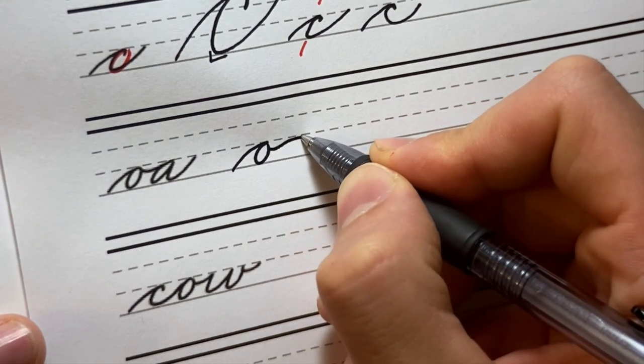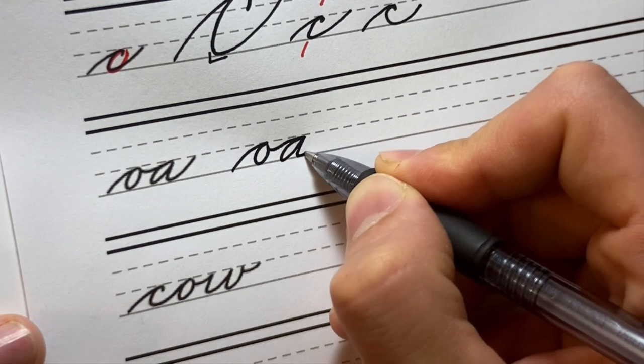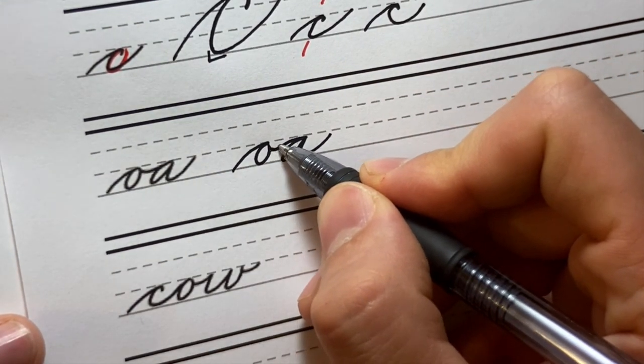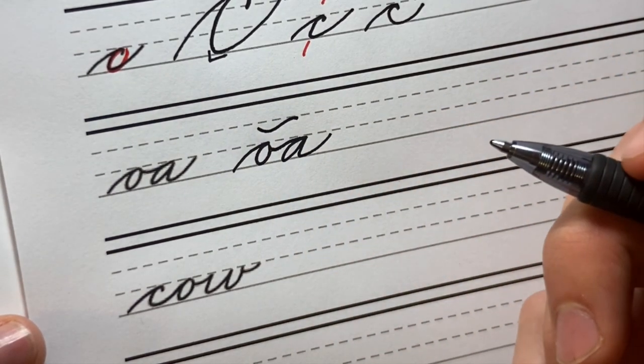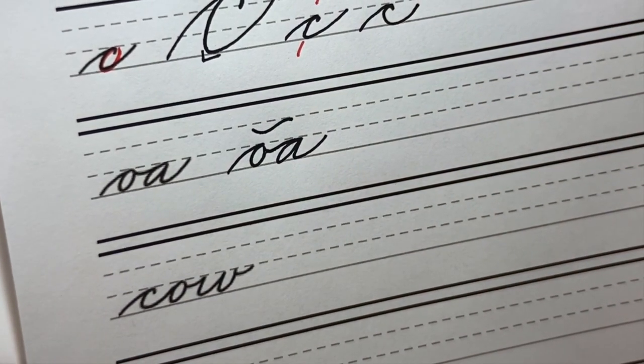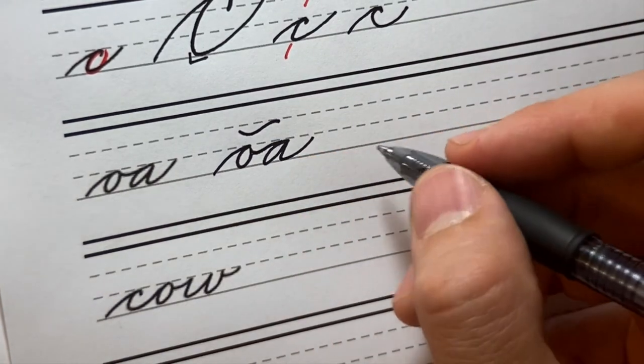Curling up and over. I exaggerated that a little bit just so you can see the kind of stroke that I'm making. It's curling like that and like that. I call that a compound curve. Now it doesn't need to be that exaggerated. I did that on purpose just so you can see the kind of move that you're making with your hand.